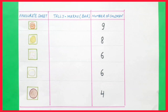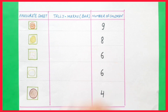Children, now we will write this information in the form of tally marks. Children, you have already learned tally marks in your previous classes. Here, the collected information is written in groups of five. So I will show you how to write tally marks.